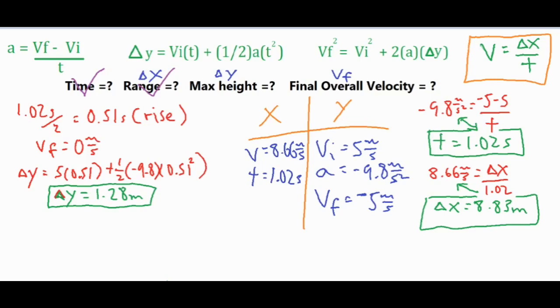I plugged in all my numbers. You find the product of these two, then subtract the product of these because it's negative 9.8 there, and you get 1.28 meters for your max height.